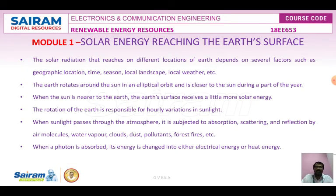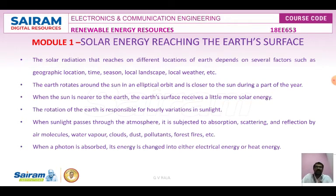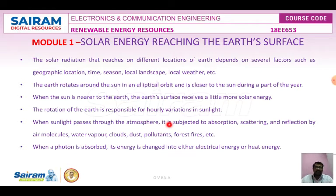Local landscape and local weather are also factors. The Earth rotates around the Sun in an elliptical orbit, which is closer to the Sun during part of the year and farther during another part. When the Sun is near to the Earth, the Earth's surface receives a little more solar energy. The rotation of the Earth is also responsible for hourly variation in sunlight.